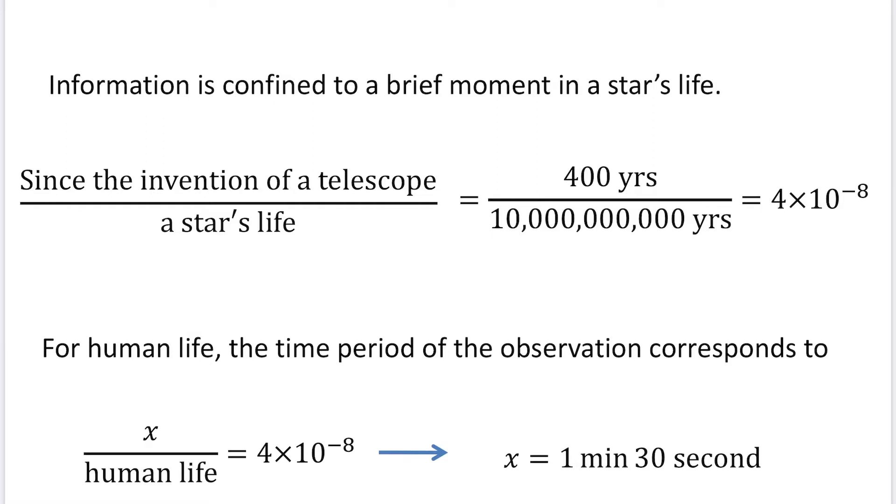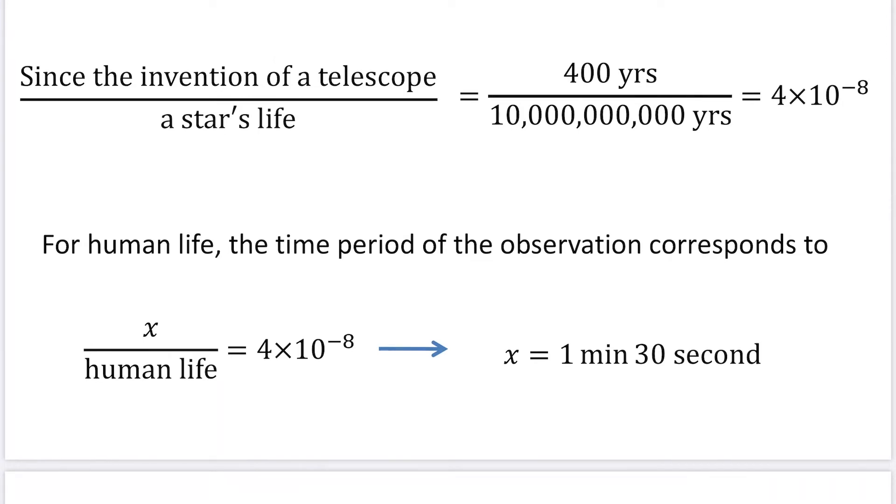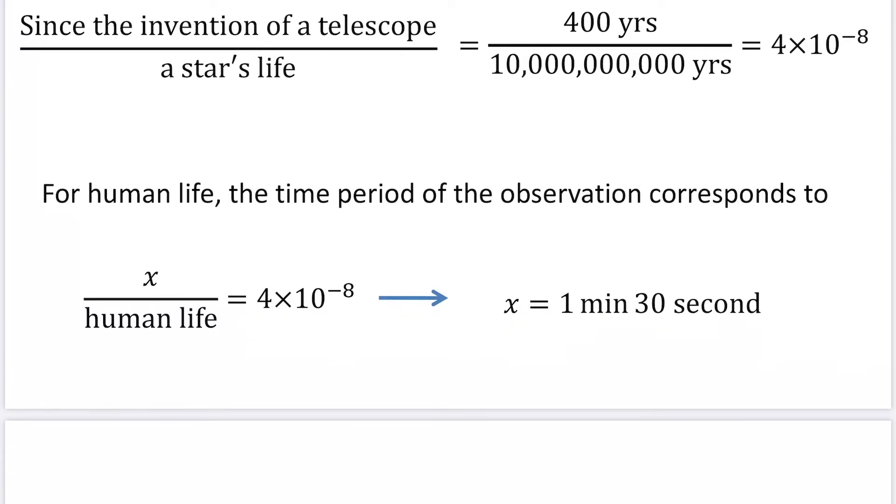It becomes 4 times 10 to minus 8. This number is really, really small. If you consider this ratio for human life, x over human life is 4 times 10 to minus 8. For human life, if you consider 80 years as the average lifetime,